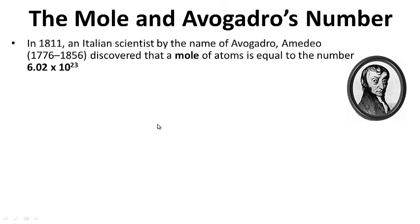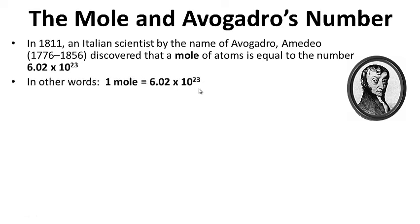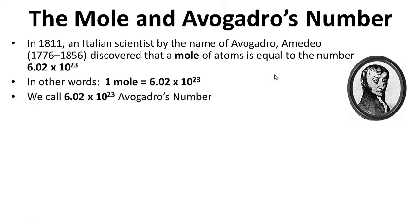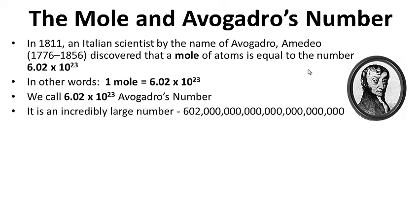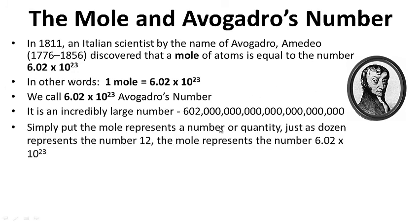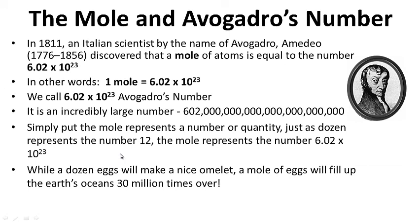The mole and Avogadro's number. In 1811, an Italian scientist by the name of Avogadro Amedeo discovered that a mole of atoms is equal to the number 6.02 times 10 to the 23rd. We call this the mole — one mole is equal to this number. We call 6.02 times 10 to the 23rd Avogadro's number. It is an incredibly huge number, so we write it in scientific notation. Simply put, the mole represents a number or quantity, just as a dozen represents the number 12. Atoms are tiny, so it's going to be a big number — while a dozen eggs will make a nice omelet, a mole of eggs will fill up the earth's oceans 30 million times over.